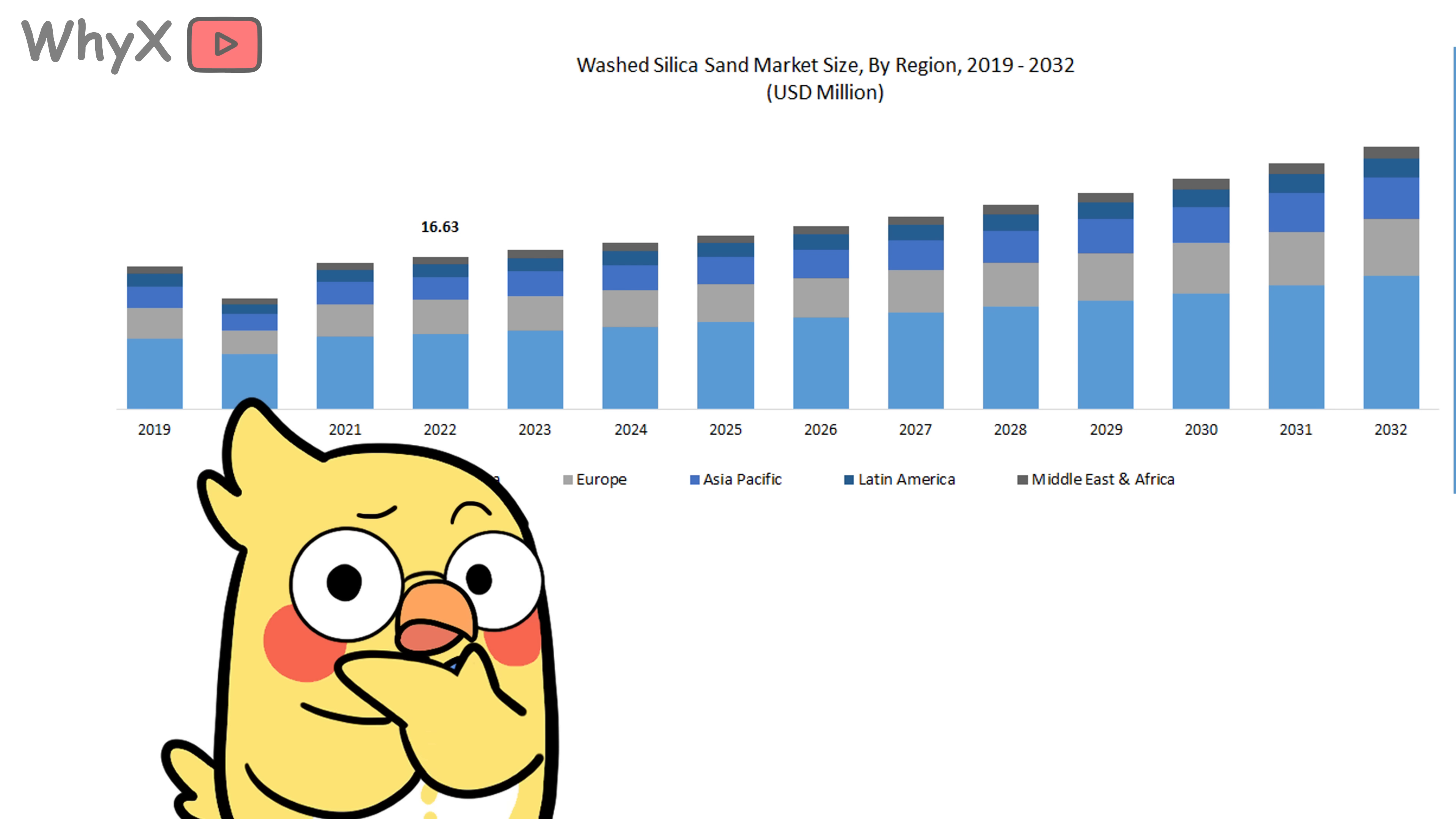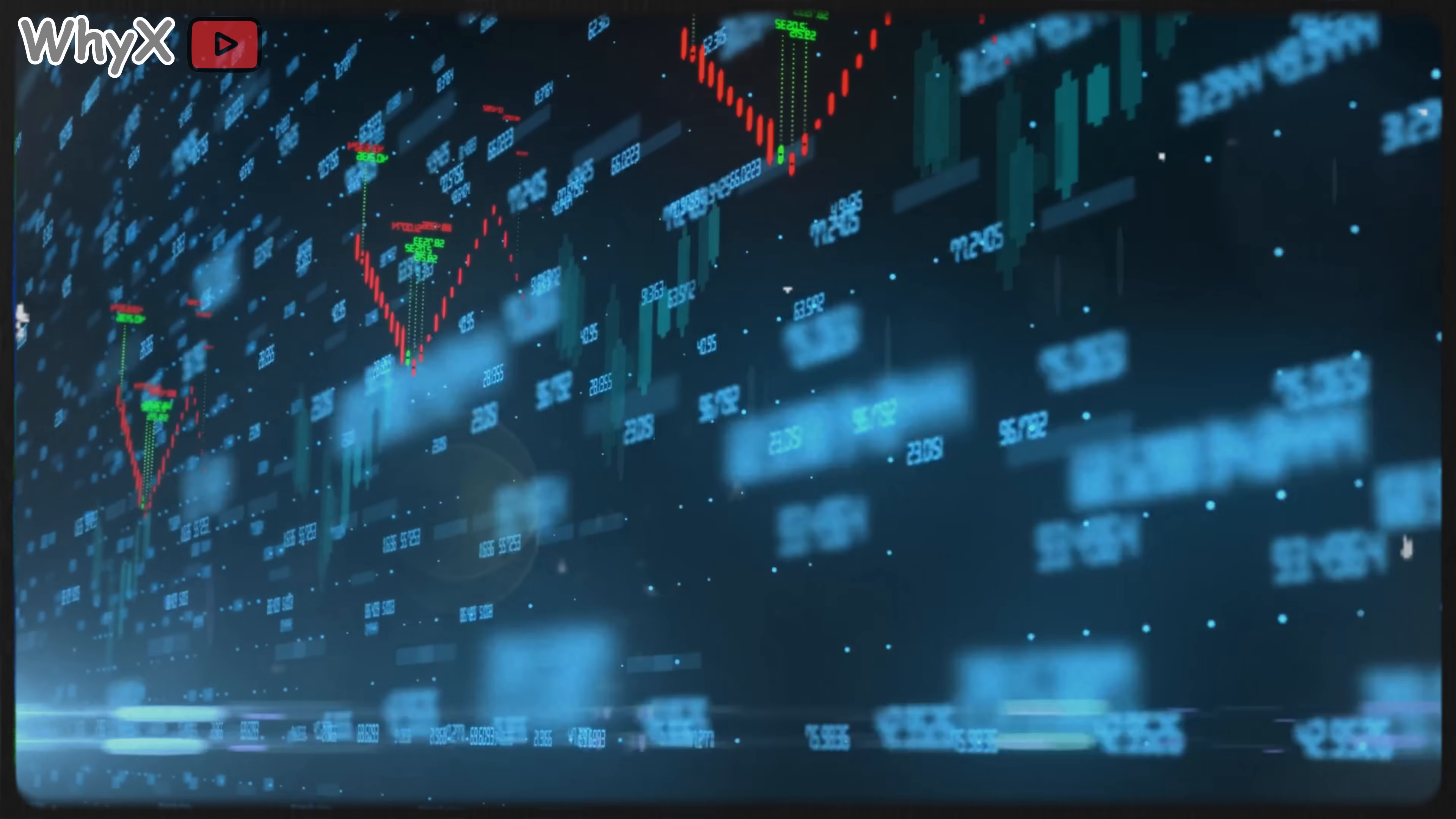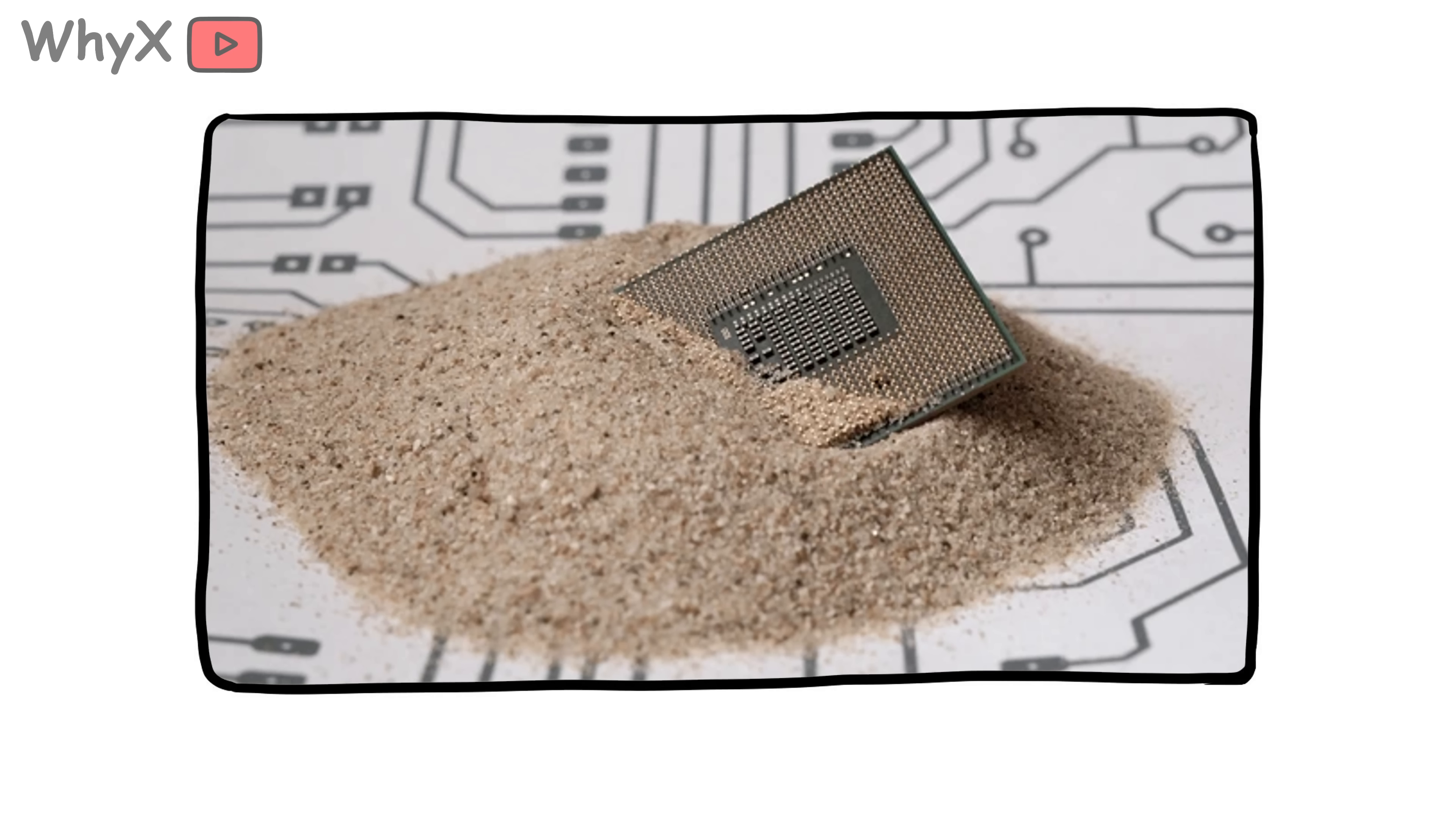Here is the scary part. Sand scarcity is already driving up construction costs in many countries. Cities are having to import sand from farther away, which means more fuel, more carbon emissions, and higher prices for homes, roads, and infrastructure. If sand becomes too scarce or too expensive, entire economies could stall. Imagine not being able to build housing fast enough. Or not being able to repair roads and bridges. Or tech manufacturers struggling to source silicon-grade sand for microchips.